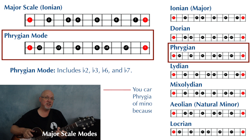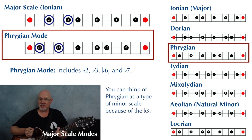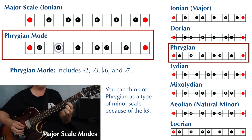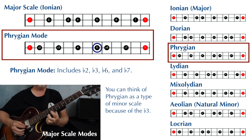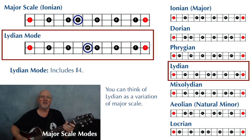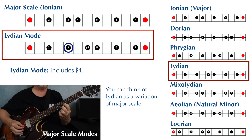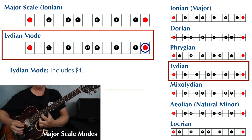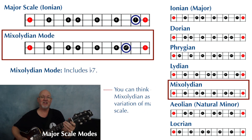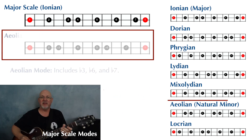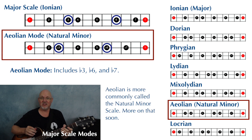Compared to the major scale, the Phrygian mode has a flat two, flat three, flat six, and flat seven. The Lydian mode has a sharp four. And the Mixolydian mode has a flat seven. The Aeolian mode has a flat three, flat six, and a flat seven.